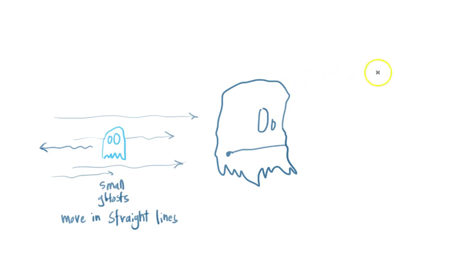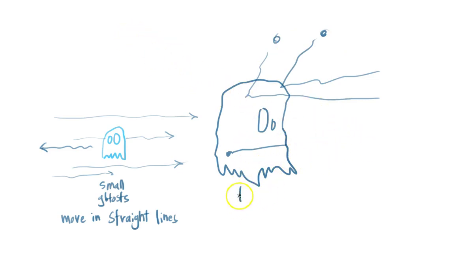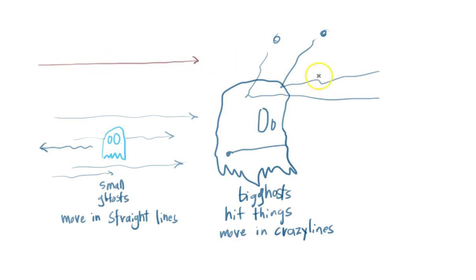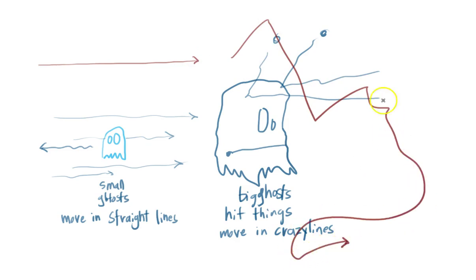But heavy ghosts — there's always stuff going twang and hitting on them. So when they move, they don't move in straight lines. The big ghosts are too big, so they hit things, and so they move in crazy lines. So you can always tell when you're seeing a small ghost because it'll move like this — like that — but a big ghost will move like this — like that. That's how you can tell the two different types of ghosts.